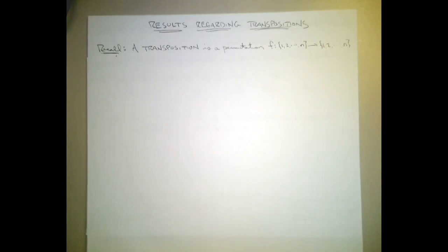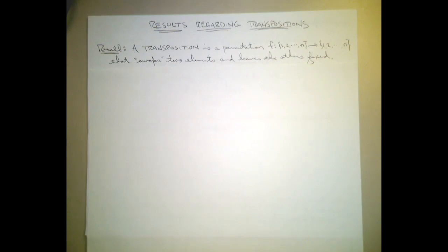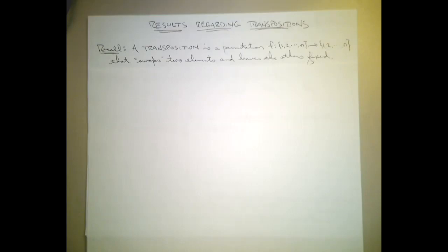We're going to talk about some results regarding transpositions. Recall that a transposition is a permutation from the set of integers 1 through n into the set of integers 1 through n that swaps two elements and leaves the others fixed. A permutation is a function that is both one-to-one and onto, so this is a rearranging of the numbers 1 through n in such a way that only two of the elements are getting swapped. Everything else is going to itself.